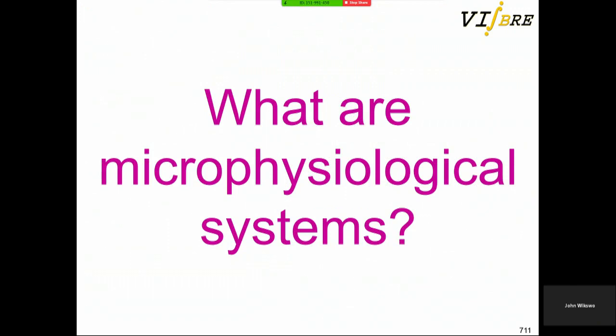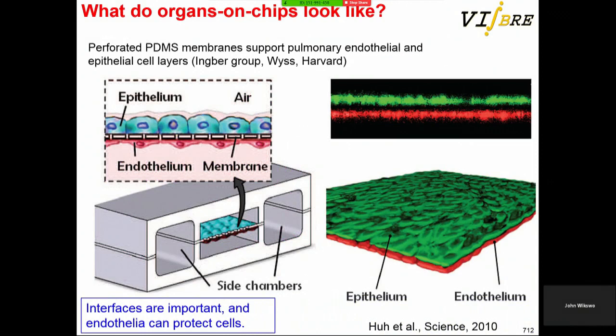For a slight overview of microphysiological systems: the lung on a chip published by Dan Hu and Don Ingber in Science in 2010 is credited with launching DOD and NIH interest in organs on a chip. It featured an air-fluid interface with epithelial cells on one side, endothelial on the other, supported by a PDMS membrane. Side chambers allowed stretching to replicate breathing, with beautiful demonstrations recapitulating physiology not evident in flat 2D biology.